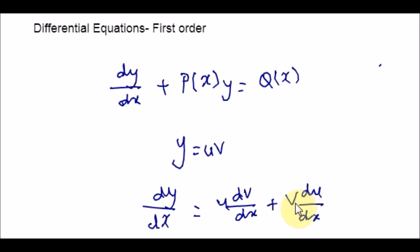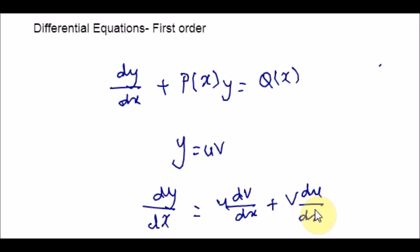Let us see this step by step. First, substitute y equals uv and dy equals u times dv over dx plus v times du over dx into the standard form dy over dx plus p(x)y equals q(x). Next, factor the parts that involve only v, and set the v term equal to 0. By doing so, we get a differential equation in u and x. Then solve using separation of variables — group all the u terms on one side and all other terms on the other side to isolate u. Finally, substitute u back to find v, then substitute u and v into y equals uv to get the solution.